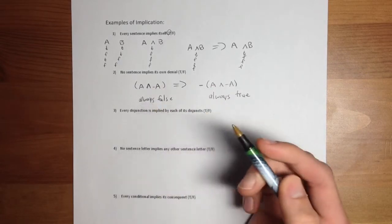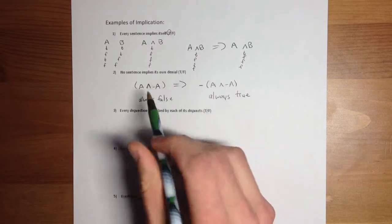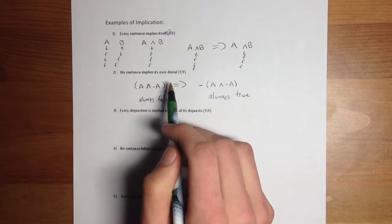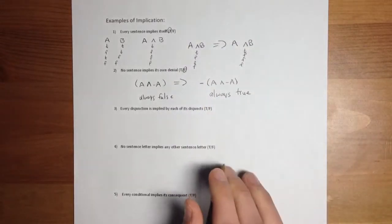And in this case, that is true because there is never a case where this is true and that's false. So no sentence implies its own denial. That, of course, is false because this does imply its own denial.